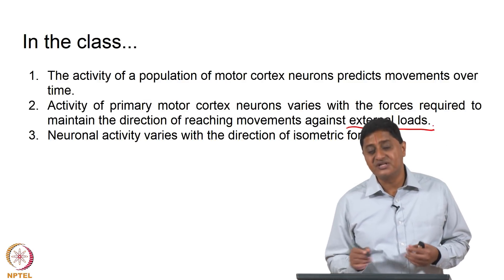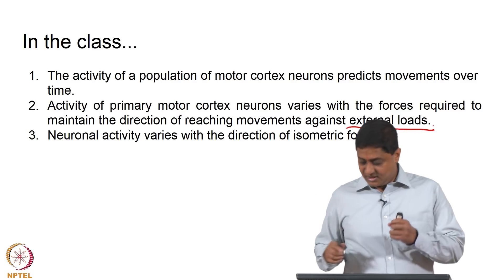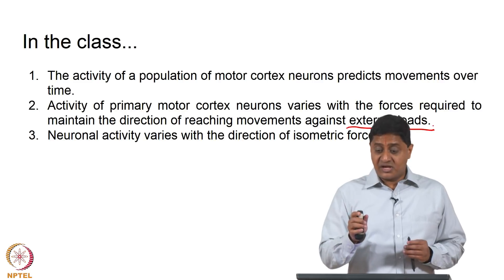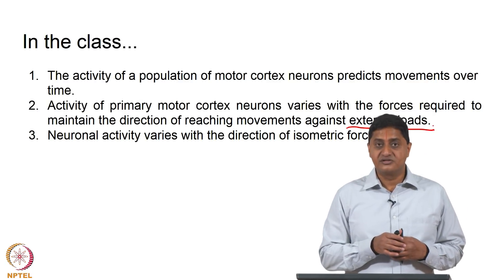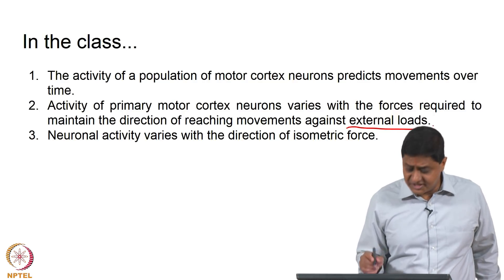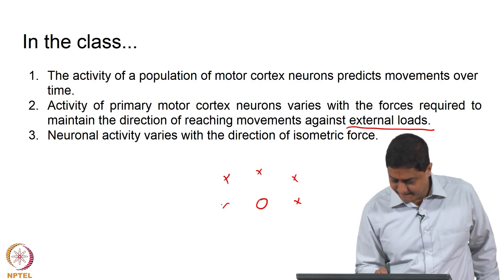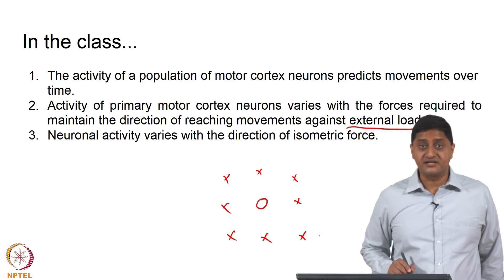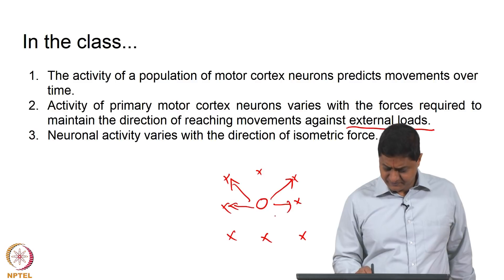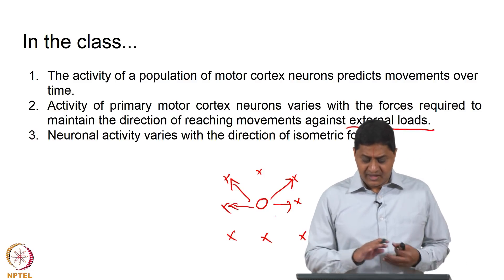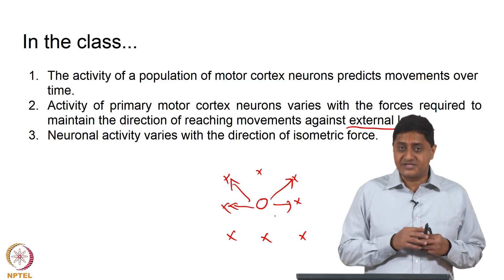In the previous case — the Georgopoulos experiment — this is the center-out reaching task. There is a center and multiple targets, and the monkey can reach to any of 8 targets. Recording the monkey's movement when there is no external load is basically the Georgopoulos experiment.